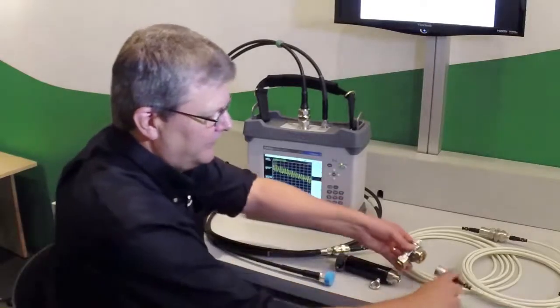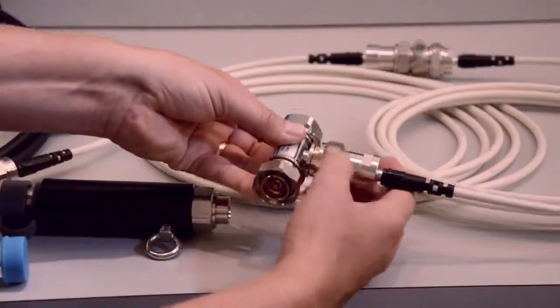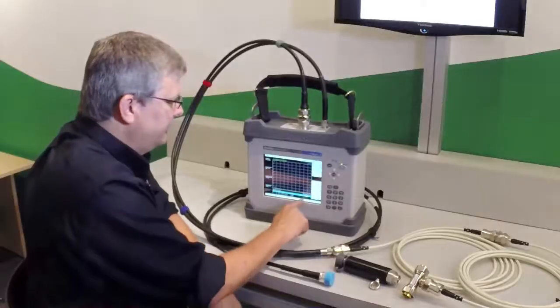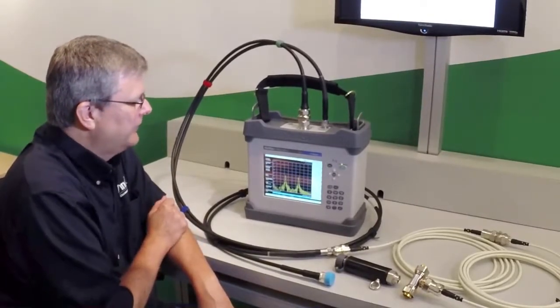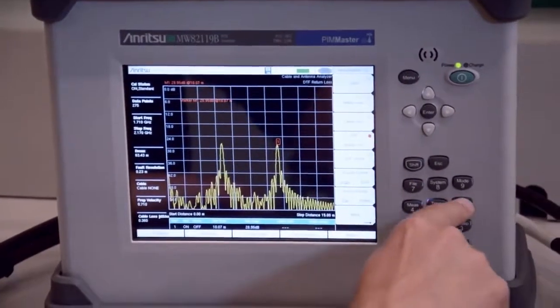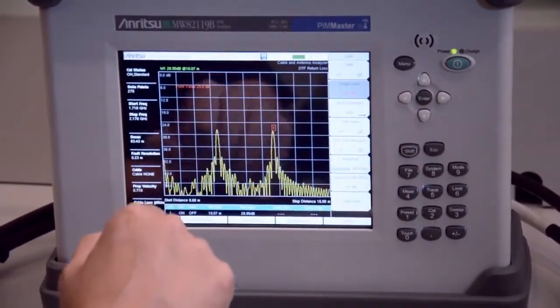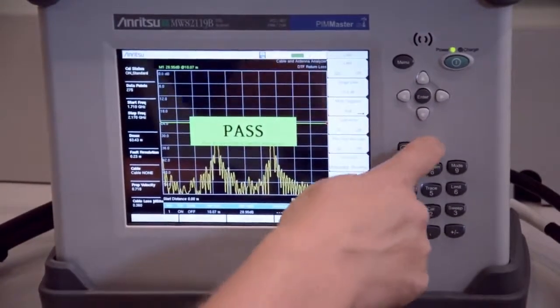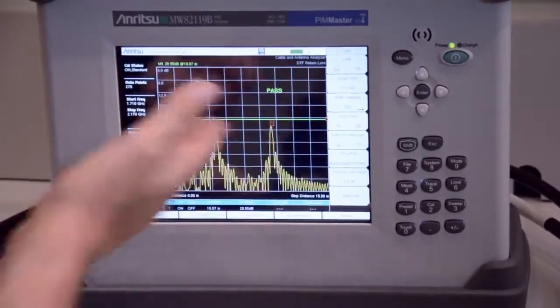The next measurement we're going to do is attaching the precision load to the end of the cable and performing a distance to fault or return loss measurement to look at the condition of the individual connectors. And in this case, we'd like to see that the individual cables are below a 25 dB level to show that each individual cable is put together correctly. And in this case, our system looks good.